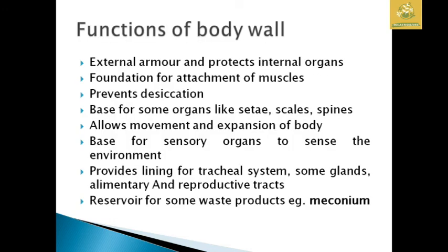In conclusion, the functions of the body wall in insects are: it acts as an external covering protecting the internal organs; it serves as a foundation for the attachment of muscles; it prevents water loss (desiccation); it forms the base for sensory organs such as setae, scales, and spines used for sensory perception and defence; it allows movement and expansion of the body; it provides a base for sensory organs to sense the environment; it lines the tracheal system for respiration and reproductive tracts; and the body wall acts as a reservoir for some waste materials like meconium.